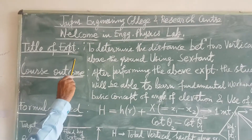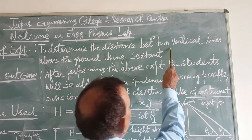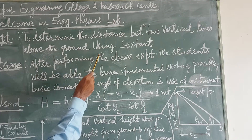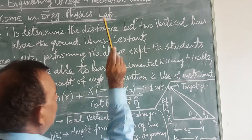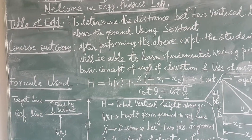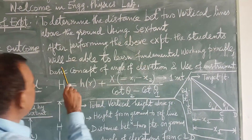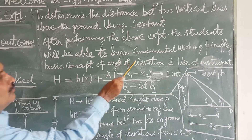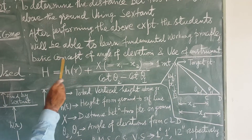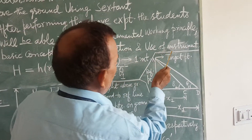The title of the experiment: to determine the distance between two vertical lines above the ground using a sextant device. Course outcome of the experiment: after performing the above experiment, the students will be able to learn the fundamental working principle of the sextant, the basic concept of angle of elevation, and use of the instrument.